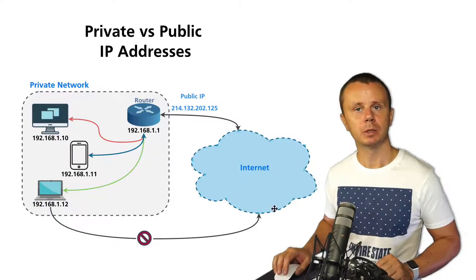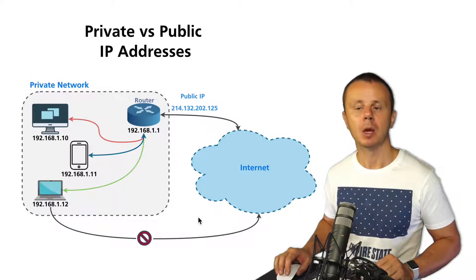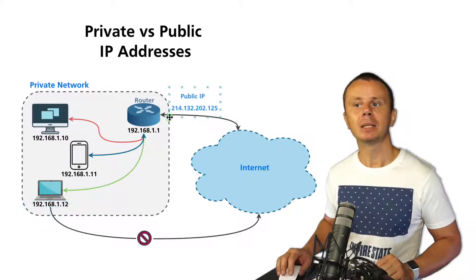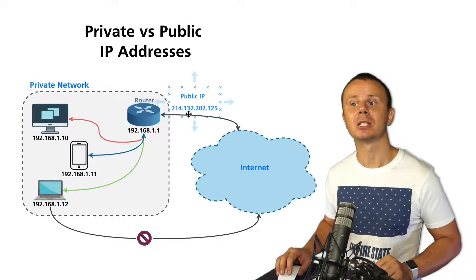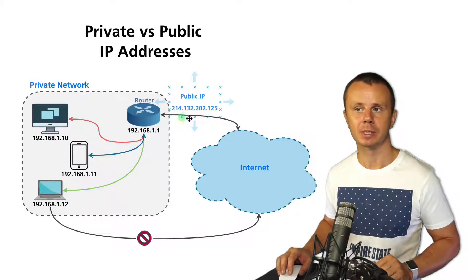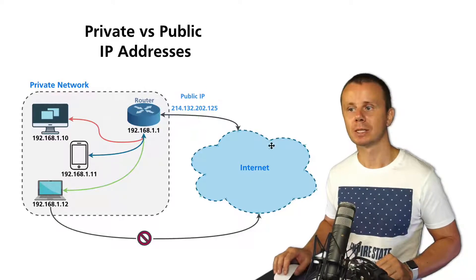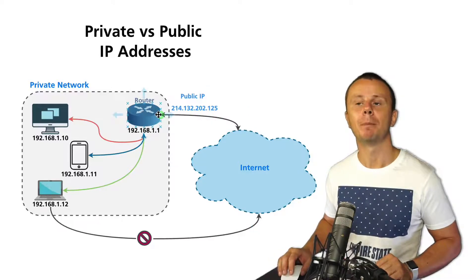But when any of those devices wants to connect to the internet and access a public web server, this access will be blocked if the source IP address in any outgoing packet remains unchanged — remains private. However, if this router has a public IP address on its external interface, as shown in this example, it will be able to access resources on the internet.